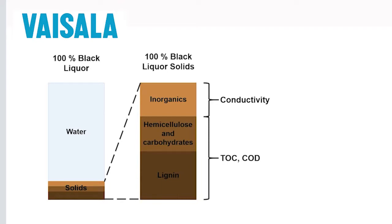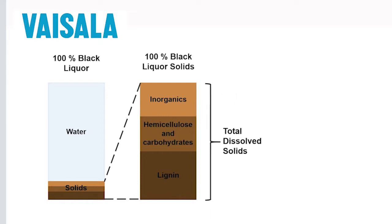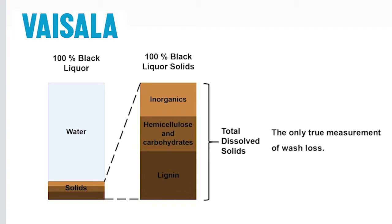COD has its place in the laboratory but it cannot be used for process control due to the considerable delay and labor involved. Total dissolved solids has proven to be the most suitable and most reliable parameter for measuring wash loss and washing efficiency, because it considers all washable solids — the organics and the inorganics. This is the only true measurement of wash loss.